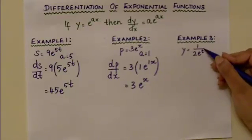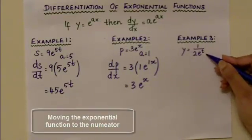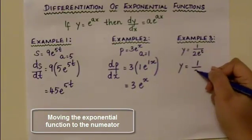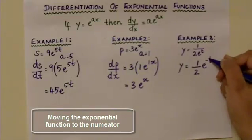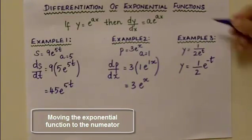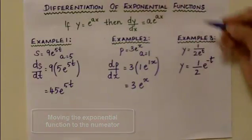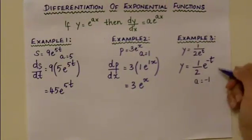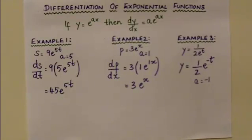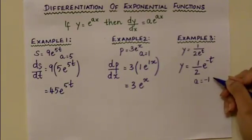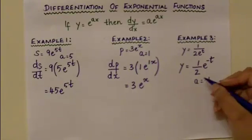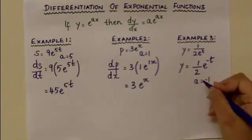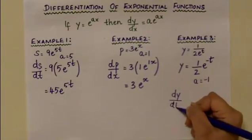When moving the exponential function from the denominator to the numerator, the power changes from positive to negative. Therefore, y becomes equal to one half e to the power of minus t. Comparing with the formula, a equals minus 1, because minus 1 times t gives minus t. Differentiating y with respect to t gives dy over dt.